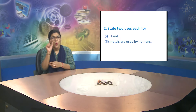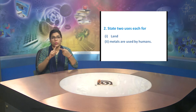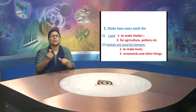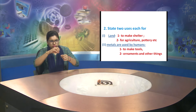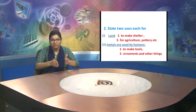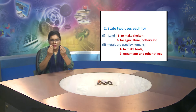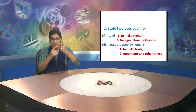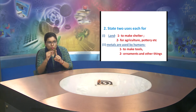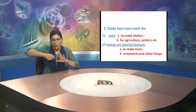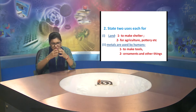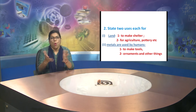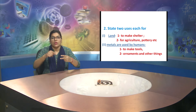Question two. You have to state two uses each for land, and the second for metals which are used by humans. The two uses for land are: first, humans started making shelter, and second, humans used land for agriculture, for pottery, and so many other works. The second part was stating two uses for metals. Humans used metal for making tools, and also metals were used for making ornaments and other different things used in daily life.